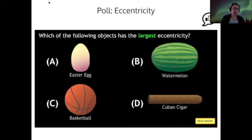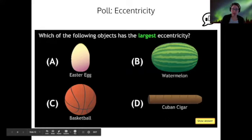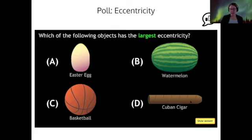So I have a poll question for you, which is, which of these objects has the largest eccentricity? And I would say that if we consider the cigar here to be an ellipse, which it's not really an ellipse, is it? But if we consider it to be an ellipse, then it definitely has the highest eccentricity, followed by the watermelon, followed by the egg. And then the basketball is a circle, so that has no eccentricity at all.